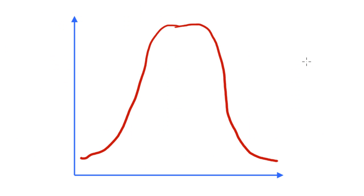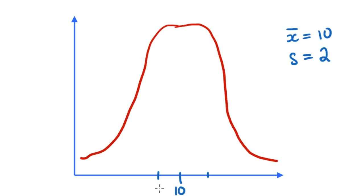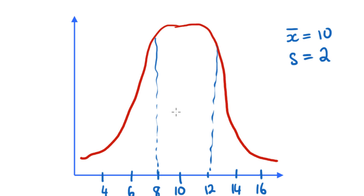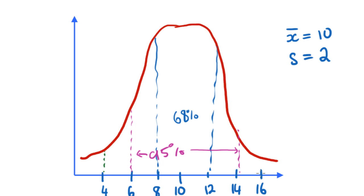Plotting all three on the same graph: say I have a mean of 10 and a standard deviation of 2. My mean is in the middle at 10. One standard deviation either side gives 8 and 12 — between 8 and 12 is 68% of the data. Two standard deviations each side gives 6 and 14 — between 6 and 14 is 95% of the data. Three standard deviations either side gives 4 and 16 — between 4 and 16 is 99.7% of the data.